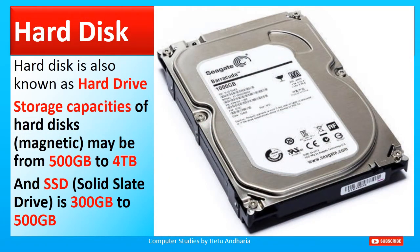Now one by one I will explain the different secondary storage devices. First, this photograph is of the hard disk which is fitted inside the CPU cabinet of your computer. Hard disk is also known as hard drive. There are two types of hard disk — one is magnetic and another is SSD. The storage capacity of a magnetic hard disk may be from 500 GB to 4 TB, and the SSD hard disk capacity is smaller, ranging from 300 GB up to 500 GB.